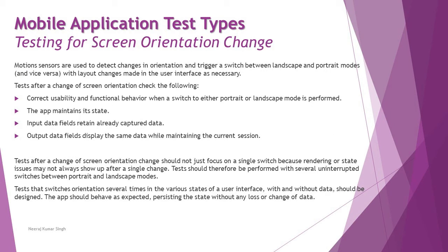The next topic is screen orientation change. Many apps support tilting the phone to switch between portrait and landscape views. Some apps only work in portrait mode, while others auto-adjust and show a better view in landscape. Motion sensors are used to detect changes in orientation and trigger a switch between landscape and portrait modes, with layout changes made in the user interface as necessary.